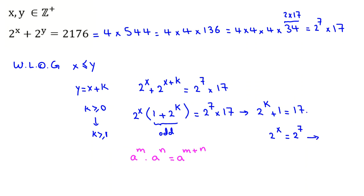From here, if we take 1 to the right-hand side, 2 to the k is 16. So we can conclude k equals 4. And 2 to the x equals 2 to the 7, so x equals 7.